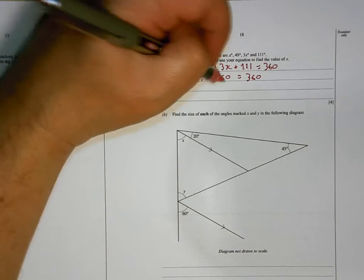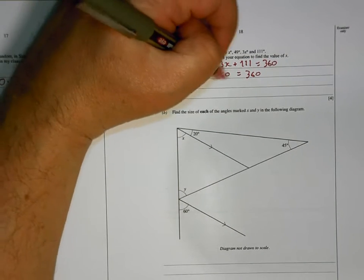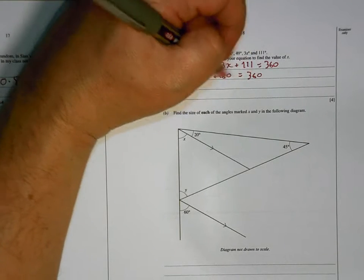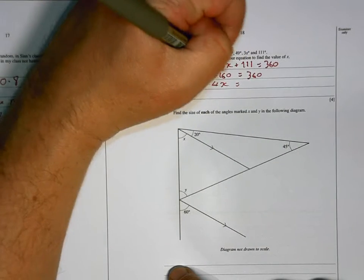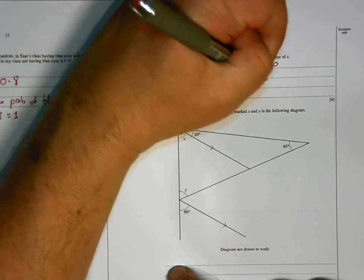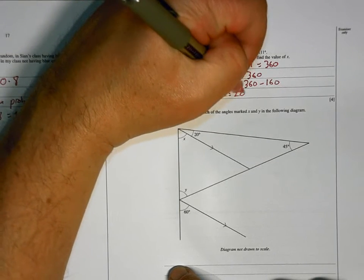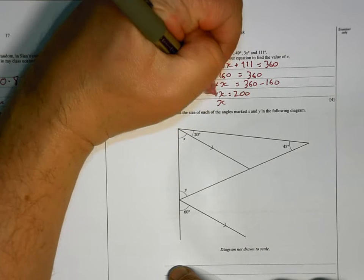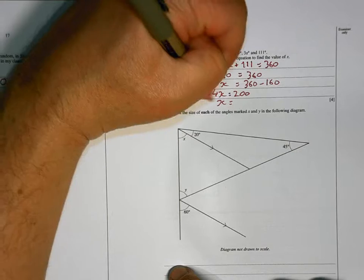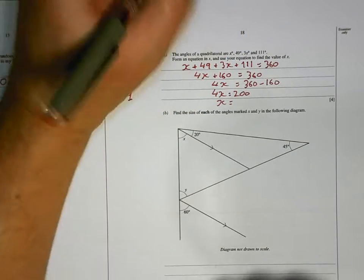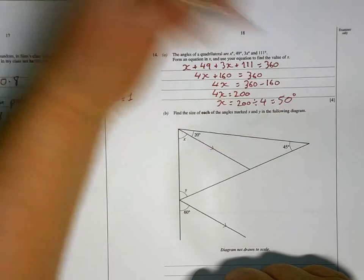Now, I need to get the x's on their own. So I have to get rid of that add 160. To get rid of add 160, I've got to take 160 off both sides. So, if I take 160 off that side, it's gone. It means I've got to take 160 off that side too. Which means 4x is 200. 4 times x is 200. So, to get 1 times x, I've got to do the opposite of times it by 4, which is dividing by 4. So, 200 divided by 4 is 50 degrees.